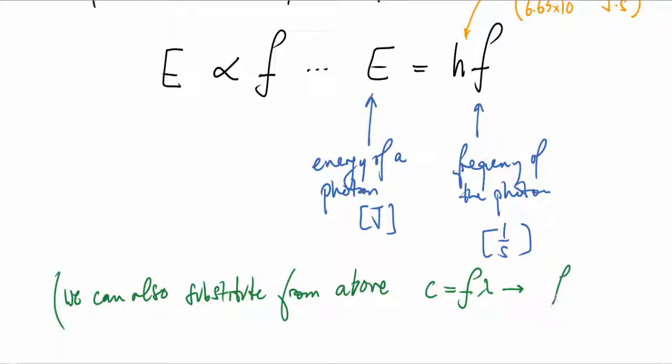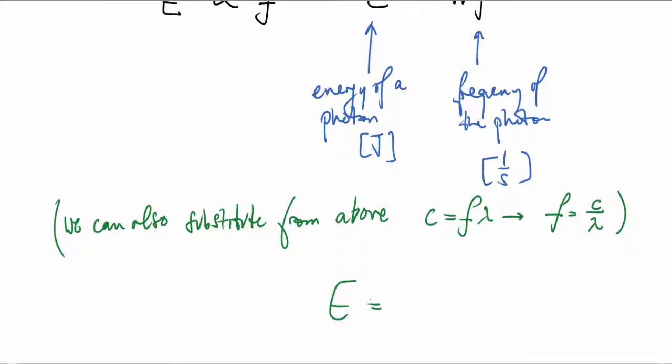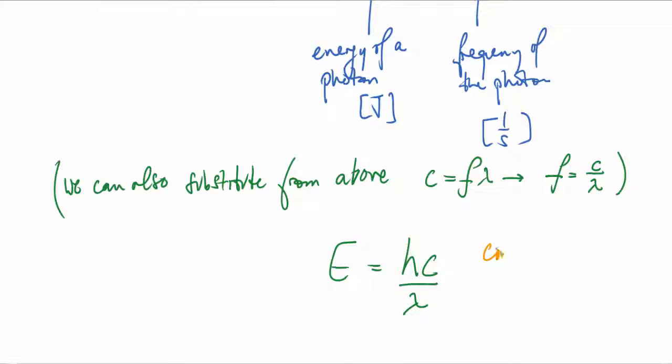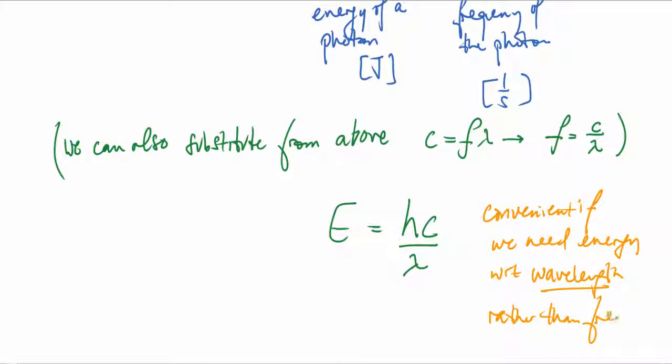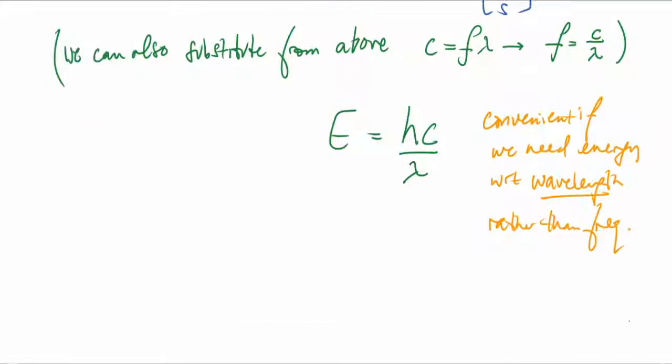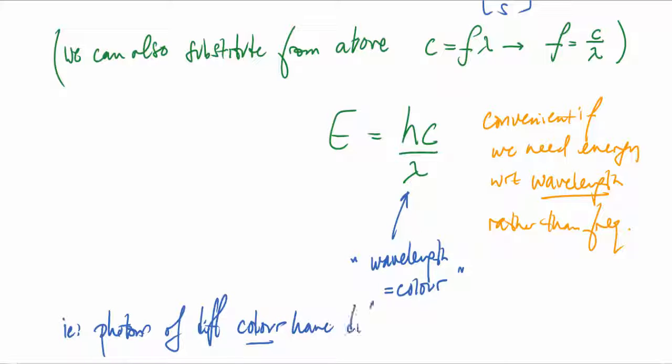We can substitute from c equals f lambda to make f equals c over lambda, and we get the energy of a photon as hc over lambda. It's very convenient if we measure the wavelength of that photon, and since wavelength is color, it's easier to measure wavelength than frequency. The energy here will be hc over lambda where lambda is the wavelength, which we're calling color. The idea is that photons of different color have different energy.